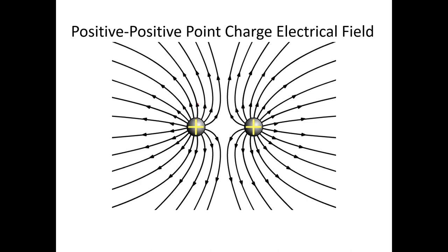With two positive charges, if you drop a positive anywhere in the field, it's going to follow the arrows going away from the positives. It doesn't want to get close to either positive. These arrows represent positive charges dropped at various locations and which direction they would flow if placed there.